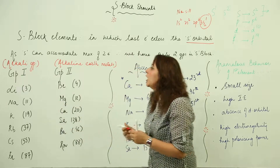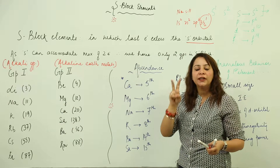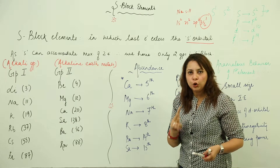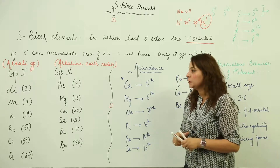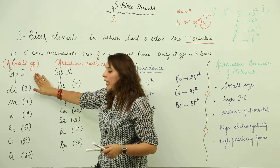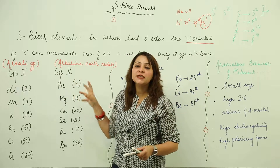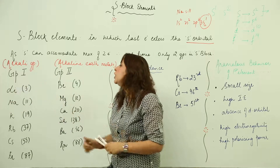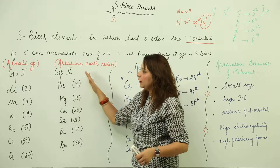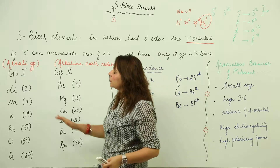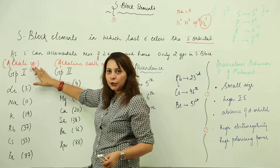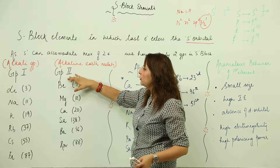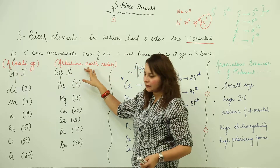Since s can accommodate a maximum of 2 electrons, there are only two groups in the s block: Group 1 and Group 2 — the first and second groups of the periodic table. The s block is present on the left side of the periodic table. The general name used for Group 1 is the alkali metals, and the general name for Group 2 elements is the alkaline earth metals.